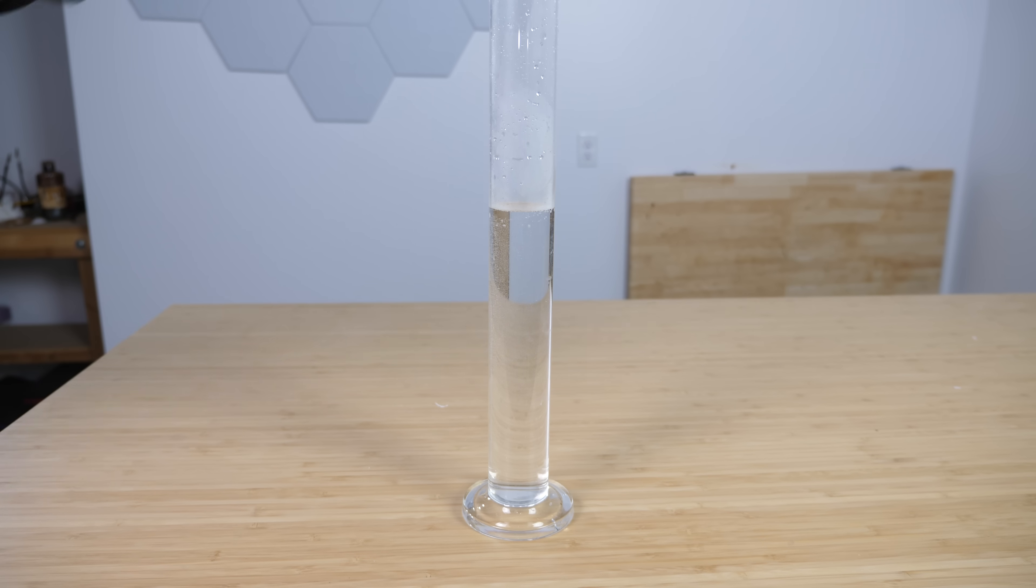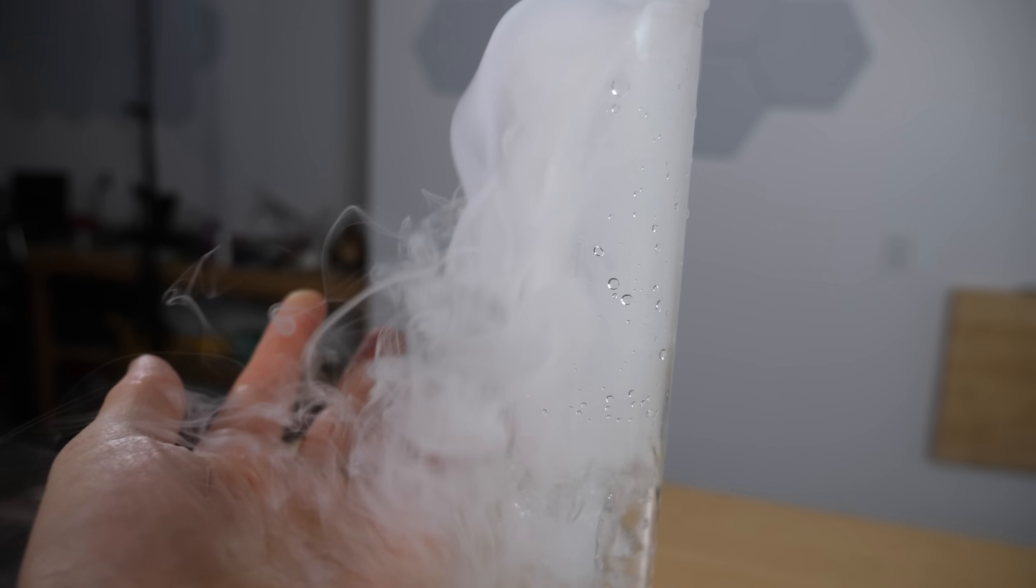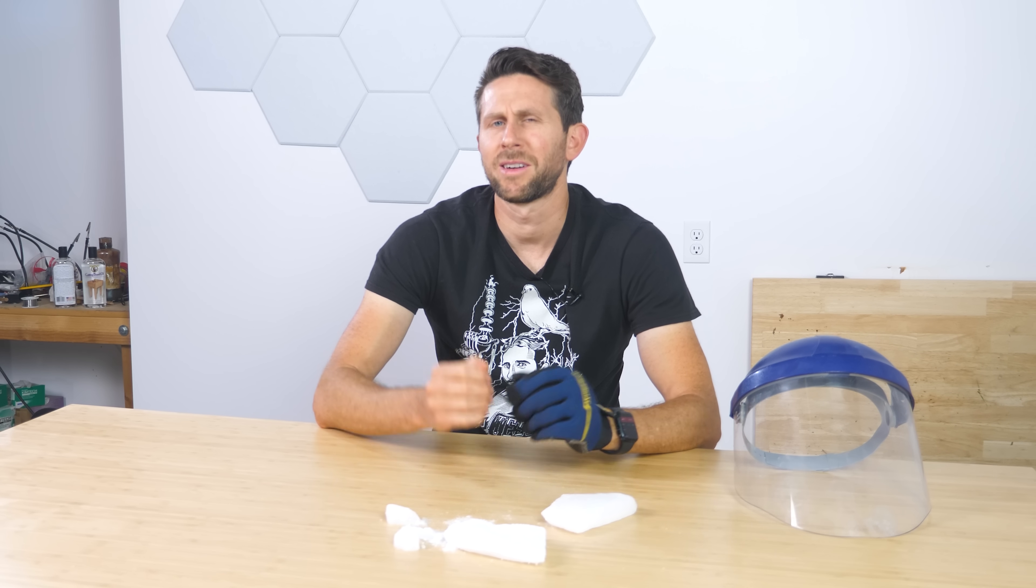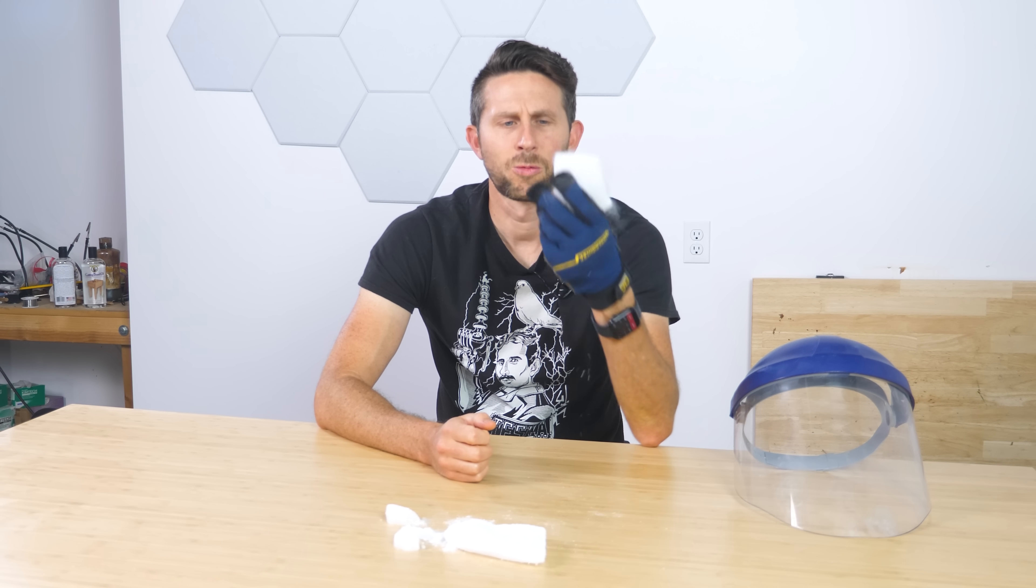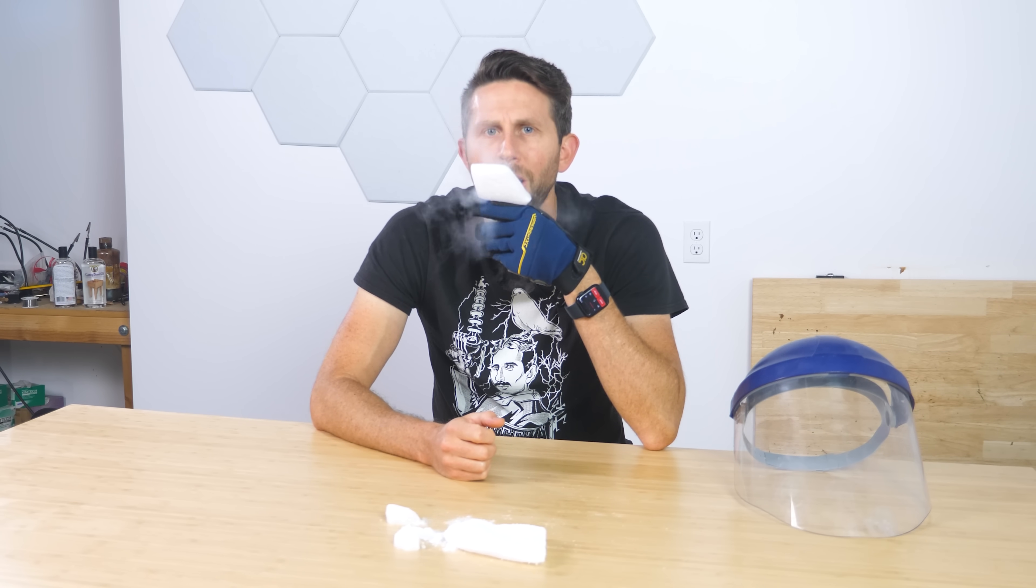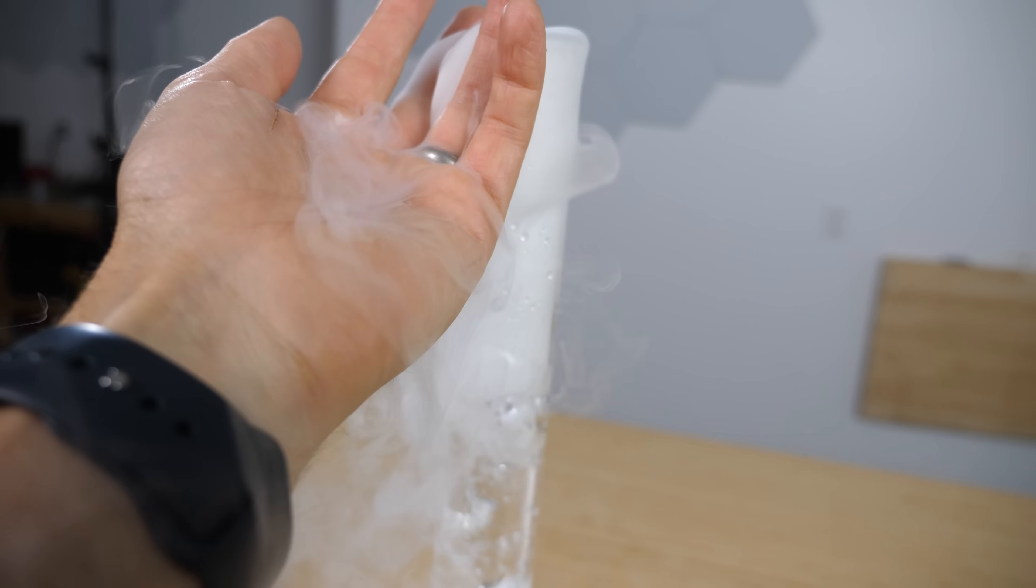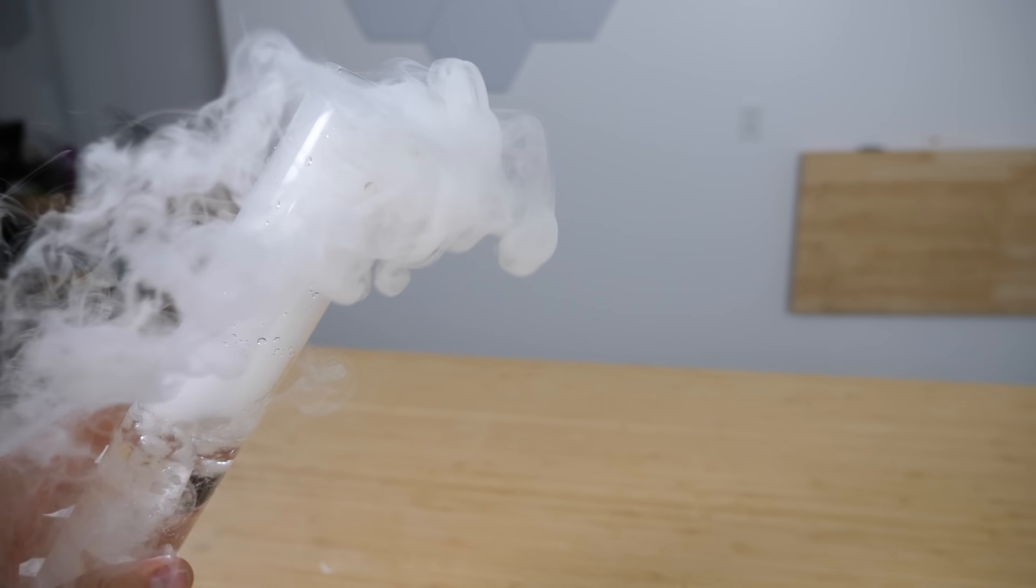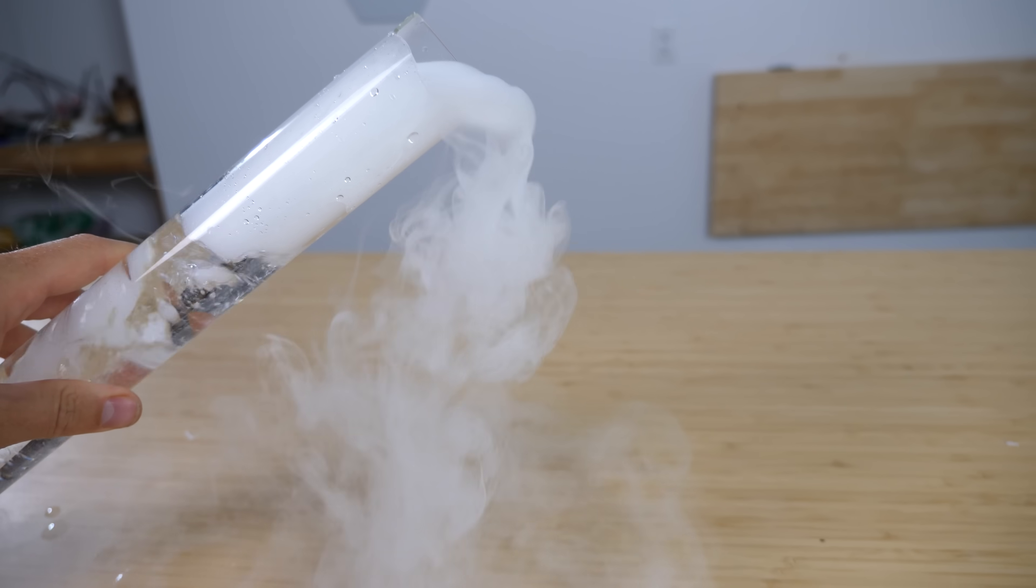But if dry ice is just CO2, then why is there always this white smoke around it? If you drop it in some water, you can get some really cool fog effects for Halloween. So the fog just pours out of the water here. But last I checked my own breath, you can't see CO2. So why can I see this CO2? Well, this white fog is actually the water coming from the air condensing to form tiny little droplets. So the fog isn't CO2, it's water.